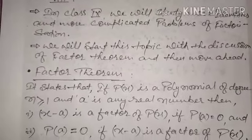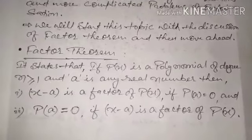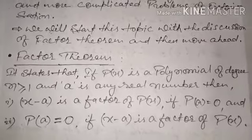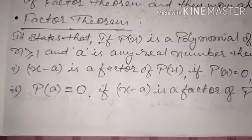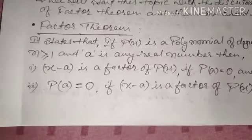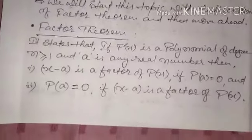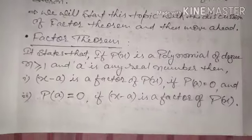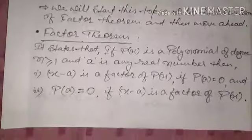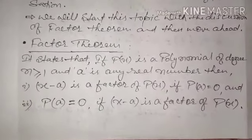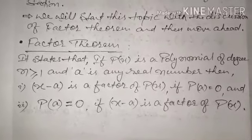We'll start the topic with the discussion of the Factor Theorem and then move ahead. The Factor Theorem states: if p(x) is a polynomial of degree n ≥ 1 and a is a real number, then we have two conditions.